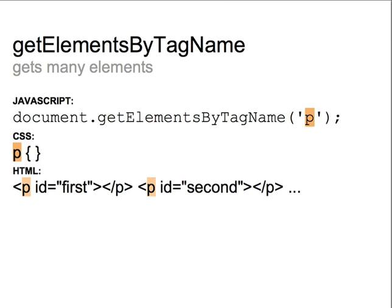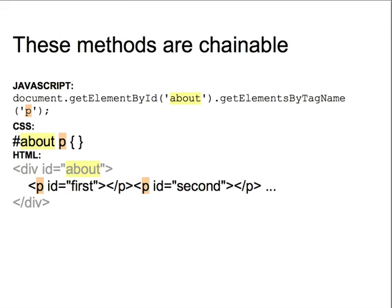There's also getElementsByTagName, which returns a collection of node objects corresponding to all the descendants of a given element that have a certain tag name. For example, calling document.getElementsByTagName with an argument of 'p' would return nodes corresponding to all the paragraph elements in the webpage. That would be equivalent to the elements selected by a CSS selector selecting all paragraph elements. Because these methods are available on any node object, they can be chained together. So, doing document.getElementById('about').getElementsByTagName would be equivalent to that CSS selector, and it would return nodes corresponding to paragraph elements.